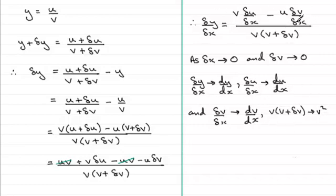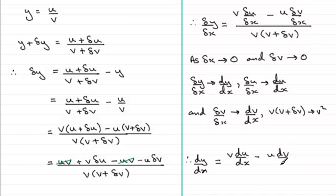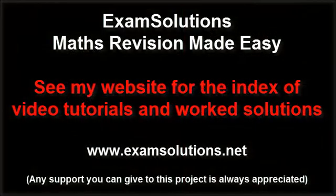Putting these results together, we get dy/dx equals v times du/dx minus u times dv/dx, all divided by v squared. And there is our quotient rule proof for when y equals u divided by v, where u and v are functions of x.